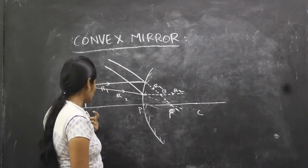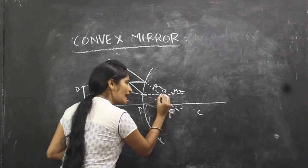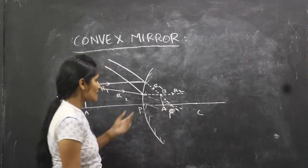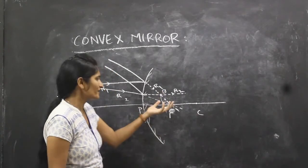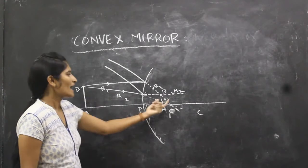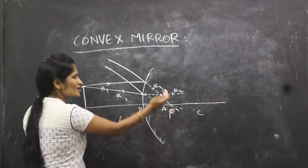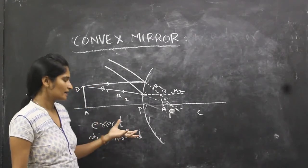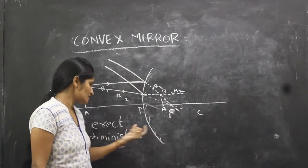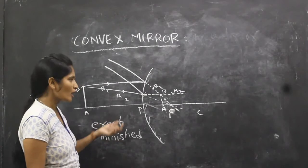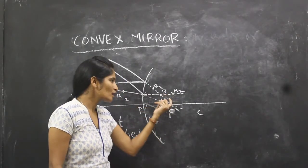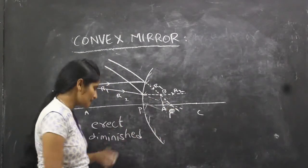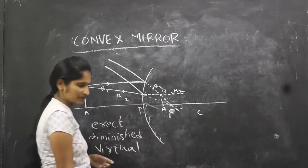To find the image of point A, I draw a perpendicular line from the image of B to the principal axis, giving image A'B'. Comparing the image with the object, the image is erect and diminished in size. We cannot see this image on a screen because it is formed by extending the rays backward — so it is a virtual image. These are the characteristics when the object is placed at infinity.